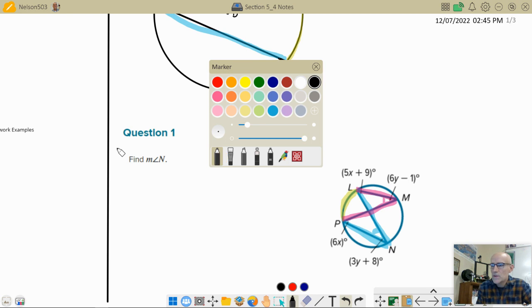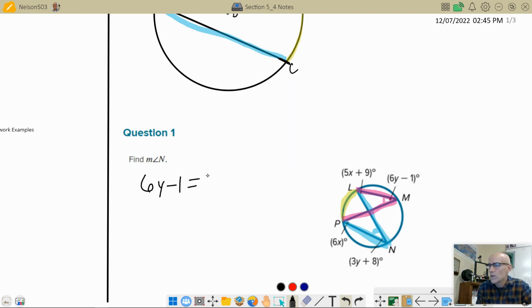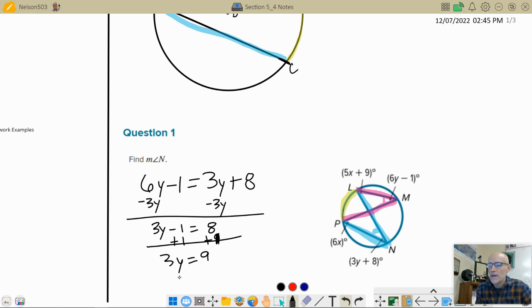So here we go. 6y - 1 equals 3y + 8. And then we're down to an algebra problem. I subtract 3y from both sides and I end up with 3y - 1 equals 8. Then I add one to both sides, I end up with 3y equals 9. And then I divide by three and I get y equals 3. Now wait a minute, that's not what they're looking for. So don't get too excited and plug 3 into the box on McGraw Hill. You got to take the 3 and you got to plug it in for the y right there. So I'm going to go 3 times 3 plus 8, so that's 9 plus 8 is 17.